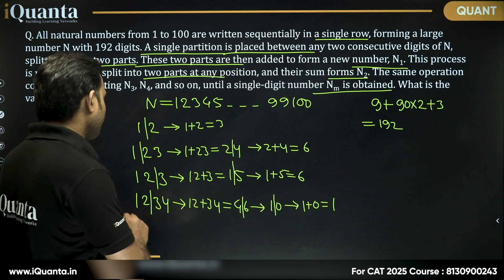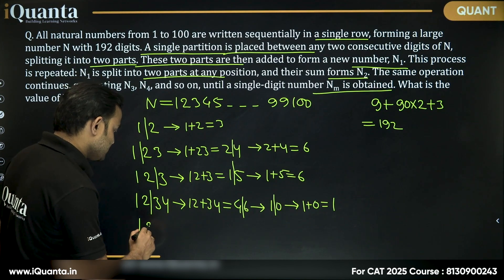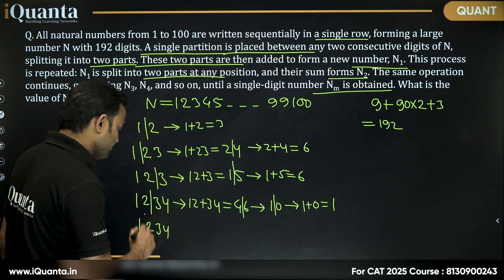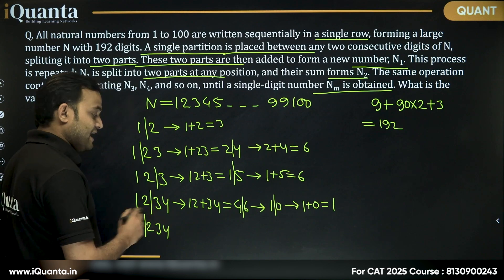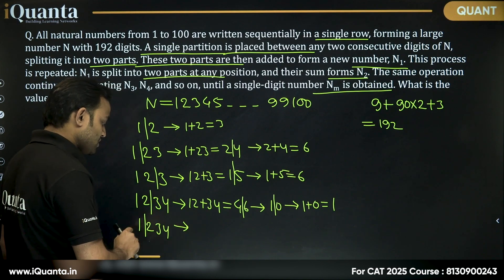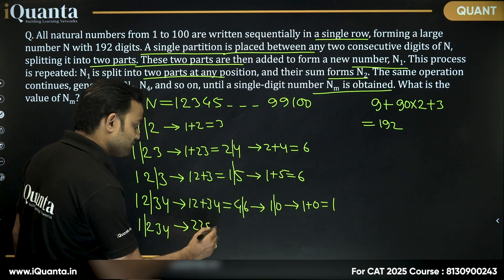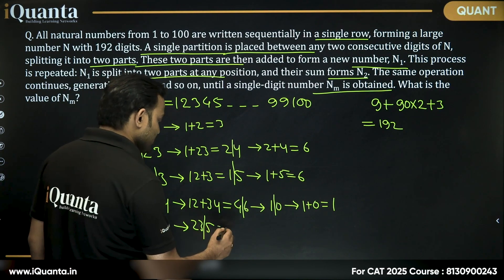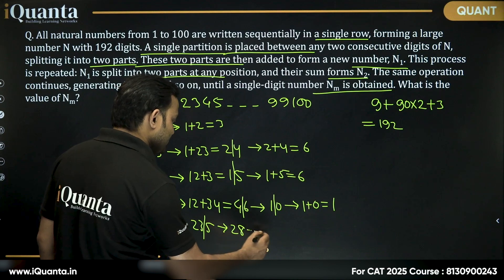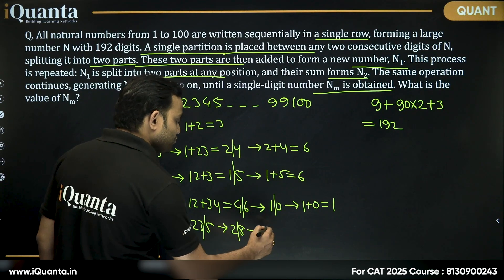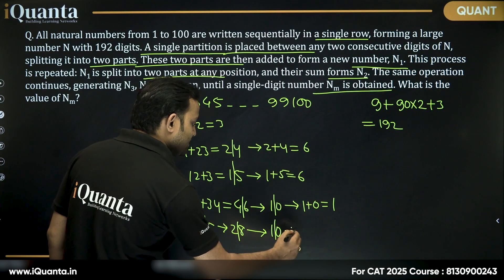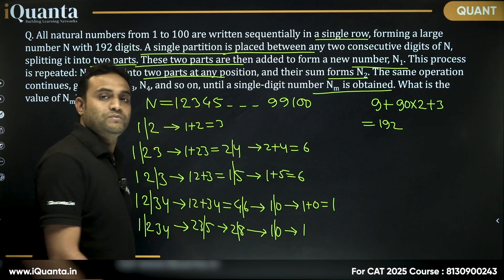Now, what if I put the partition, instead of between 2 and 3, I put a partition between 1 and 2, then sum of these two numbers, this will be 1 plus 234, which is equal to 235. Now, let's put the partition here, then we are getting 28. Then again, put the partition here, 2 plus 8 will become 10. And again, put a partition here, the sum will be 1.